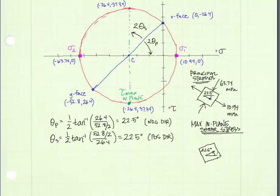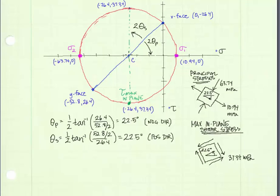For the stress element rotated to the maximum in-plane shear stress state, I will rotate it in the positive or counterclockwise direction by 22.5 degrees. When we rotate the x-face up through angle theta s, the shear stress will still be in the negative sense, so I will draw shear stress on this element in the negative direction with a value of 37.34 megapascals. There is also a normal stress acting on both the x and y faces — it will be our average stress, which is negative 26.4 megapascals in compression. And that is the final maximum in-plane shear stress element.